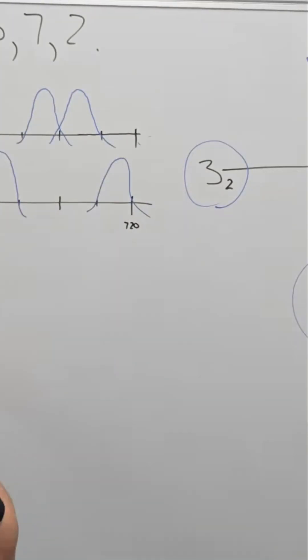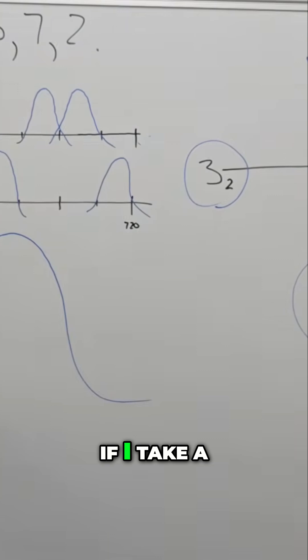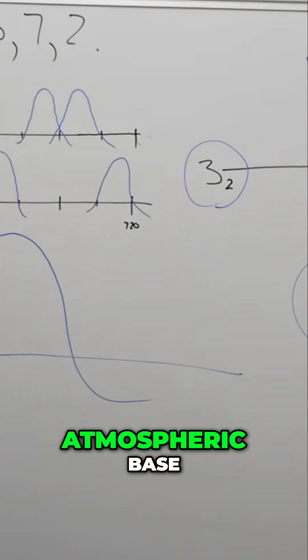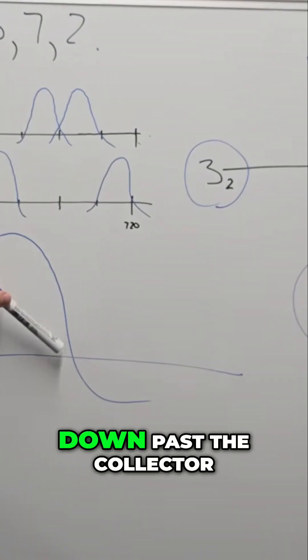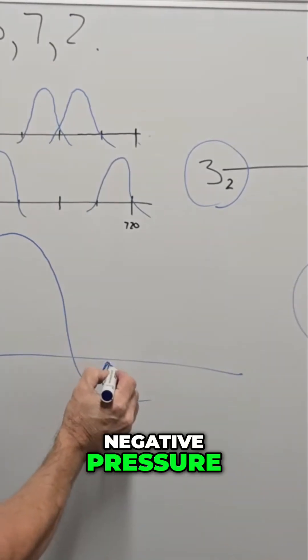Generally as the wave accelerates down the pipe, if I take a line through here and we'll call this atmospheric base, right? As the velocity and the pressure of the pipe shoots down past the collector, what it will actually do is create this negative pressure.